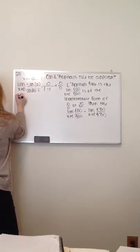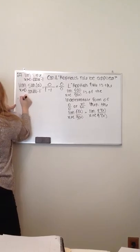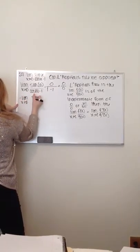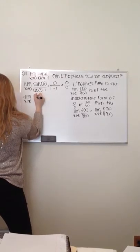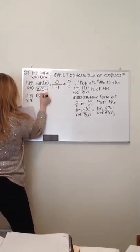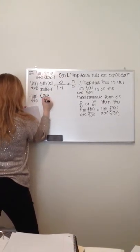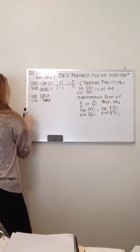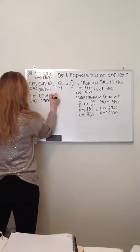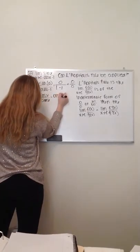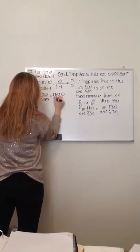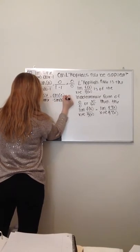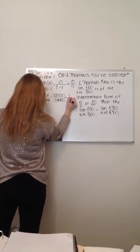So we're going to apply this here. We're going to take the derivative of the top, which would be cosine of x over the negative sine of x. And then we're just going to plug zero into there, so I'll get cosine of zero over the negative sine of zero, and that would be one over zero.